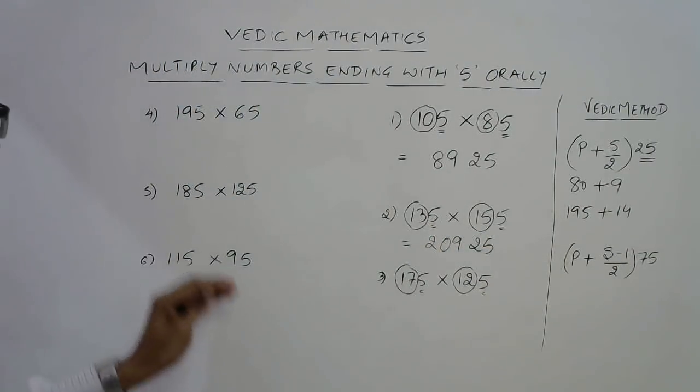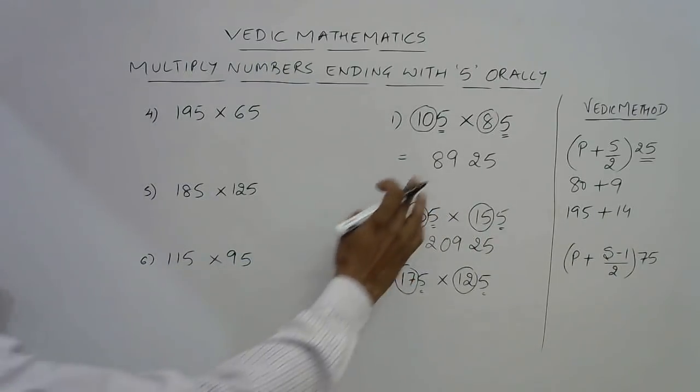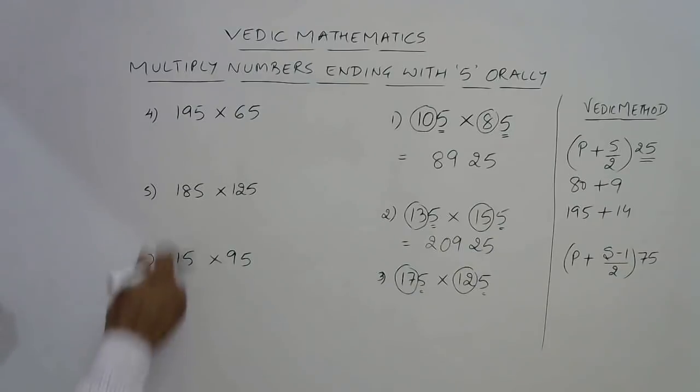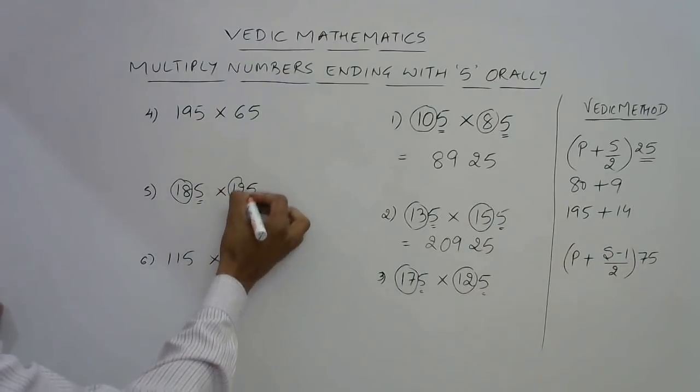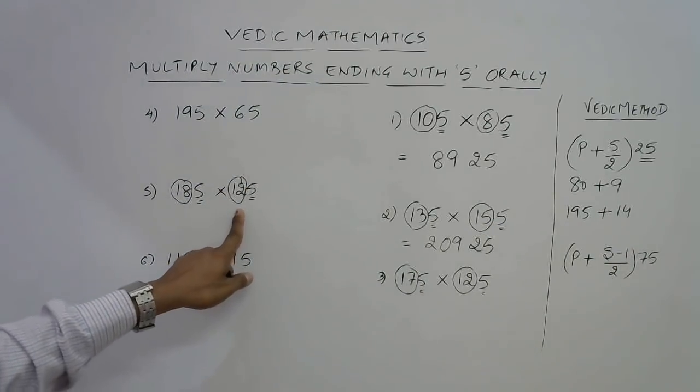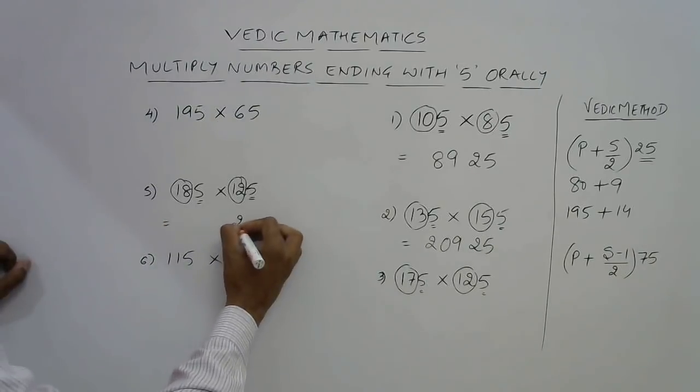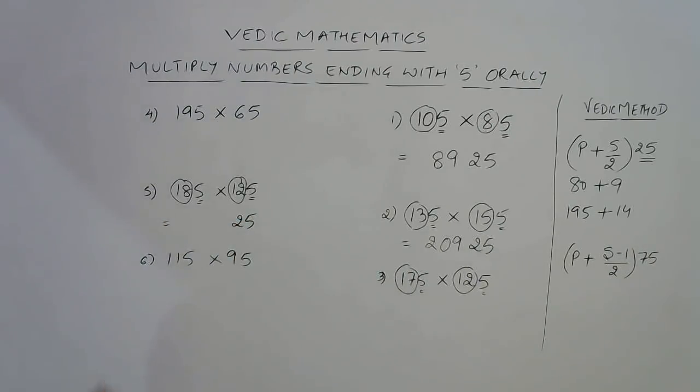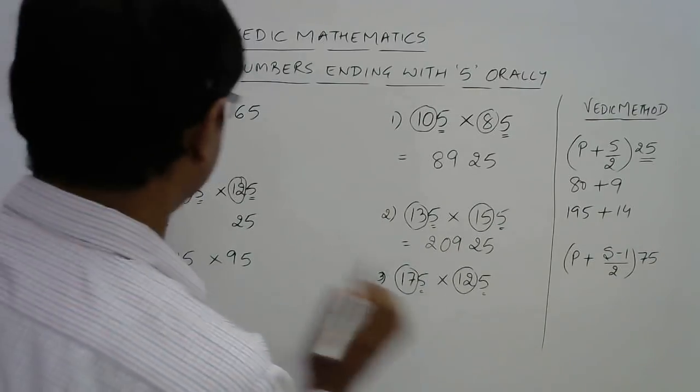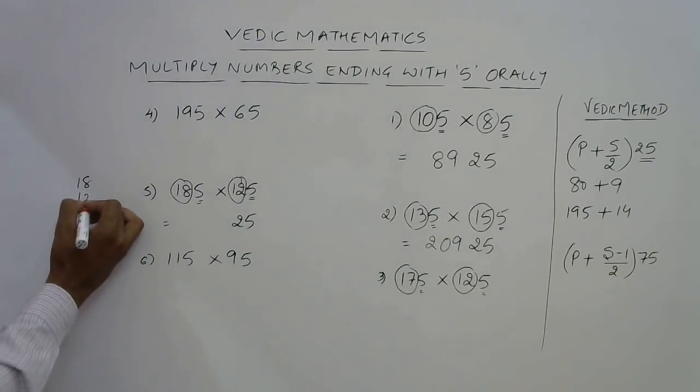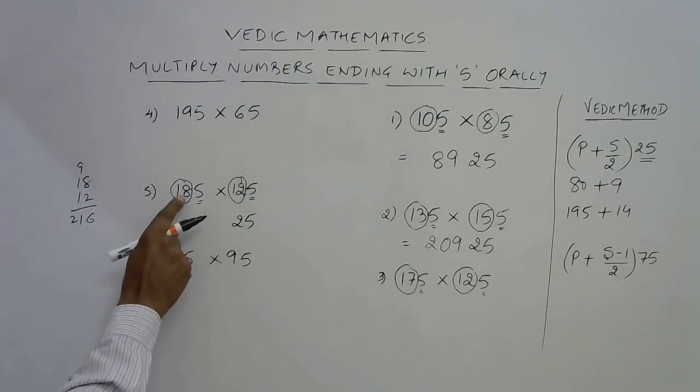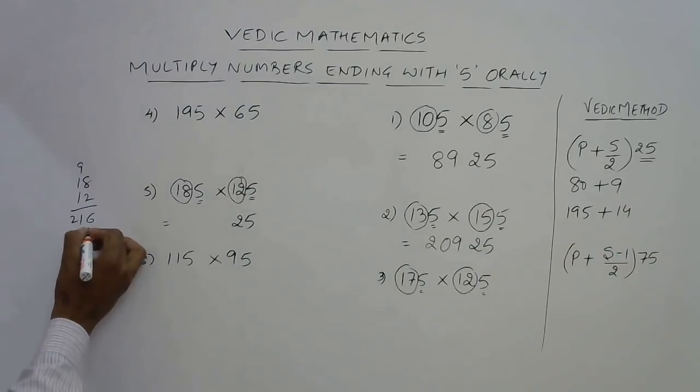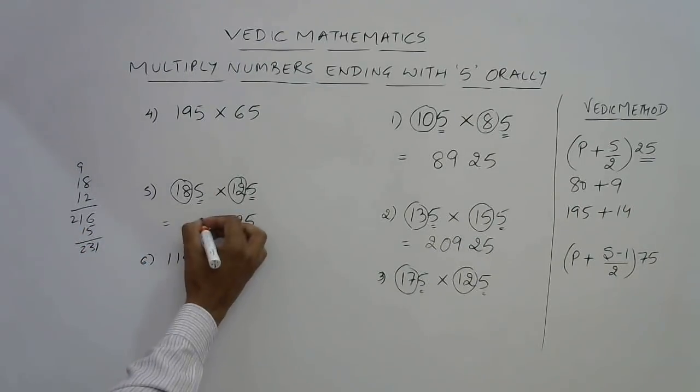Here you have 5, so 18 and 12. 18 plus 12 is 30, which is even, so now ending with 25. 18 into 12: 12 into 10 is 120, 12 into 8 is 96, so 216 is the product. 18 plus 12 is 30, half of that is 15. Add them to get 231. So your answer will be 23125.